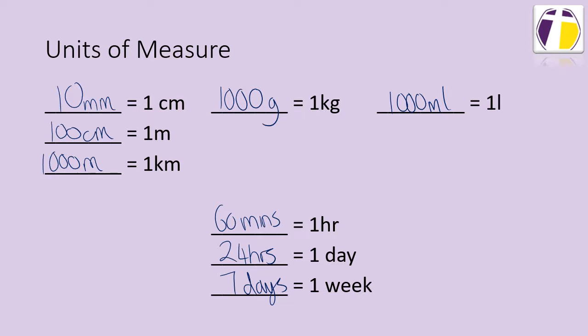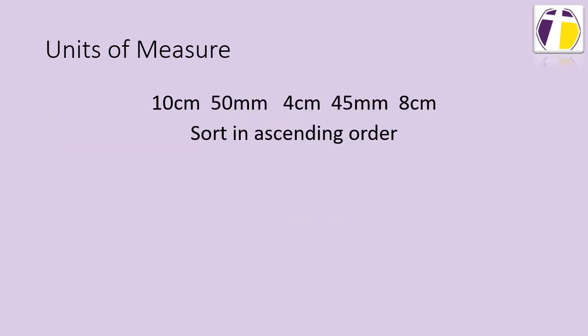Use those facts to help you when we see the next few slides. Here we have some style questions that we've been looking at this week. It says sort in ascending order. Now we've spoken quite a lot about ascending and descending. Ascending means we order getting larger, descending means we get smaller. So we're going to be ordering from smallest to largest.